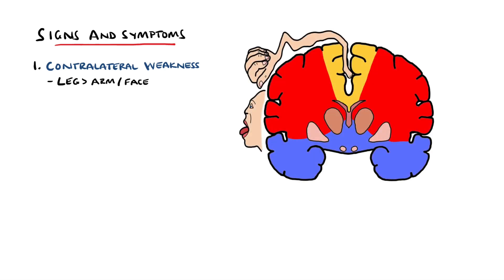In anterior cerebral artery stroke syndrome the findings vary. Most commonly there is a contralateral weakness of the leg more so than the arm or the face. This is due to the arrangement of the cortical neurons known as the motor homunculus which shows that the anterior cerebral artery supplies neurons involved mostly in the motor control of the contralateral leg.